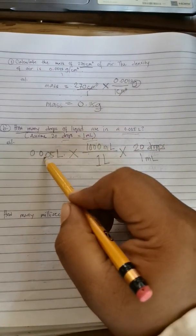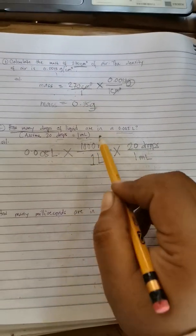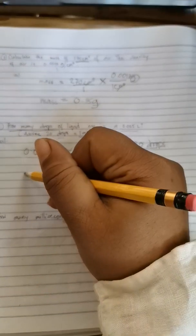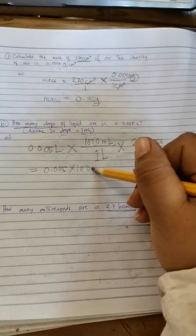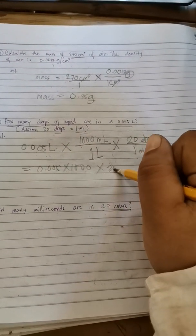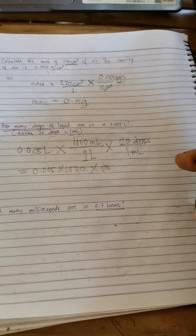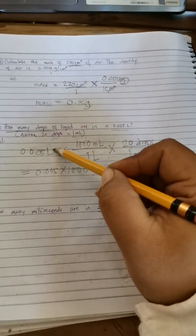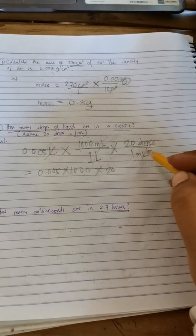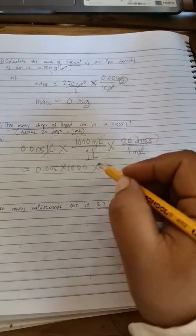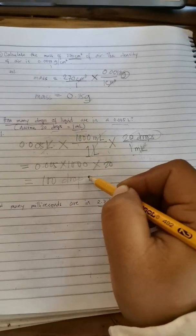Okay, so we have to multiply this one and 0.005 to 1,000 divided by 1 is the same times 20 divided by 1 is the same. So our answer here will be 0.005 times 1,000 times 20. What will happen to our units here? This will be eliminated. And milliliters will be also eliminated. The remaining unit is now drops. So the final answer will be 100 drops. Try to calculate it, checking in your calculators.